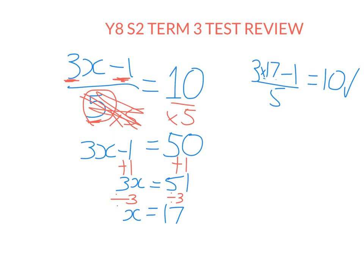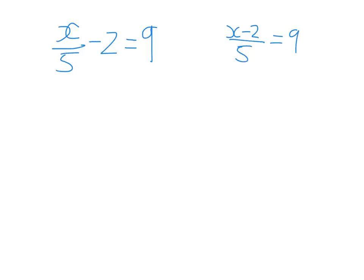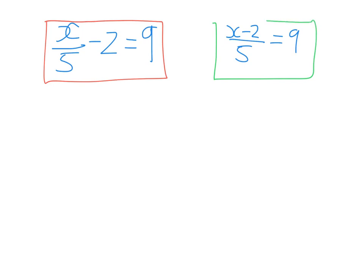It's really important that when you are solving equations, you get the order of operations correct, otherwise you'll get different answers. These two equations look very similar — the difference between them is order of operations. In the first one, x has been divided by five first, then two subtracted. In the second one, x has had two subtracted first, then it's been divided. So when we're undoing the operations, we do things in a different order.